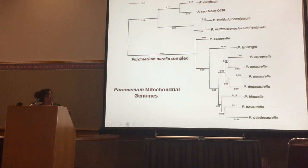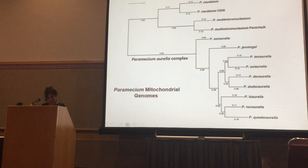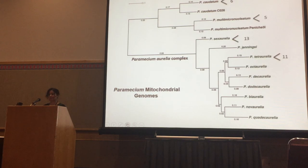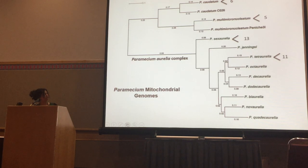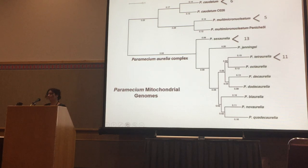These species look completely morphologically identical. We also have about 5 to 13 isolates from about four different species — caudatum, multimicronucleatum, sexaurelia, and tetraurelia — for which we mapped to the reference genomes and detected SNPs.